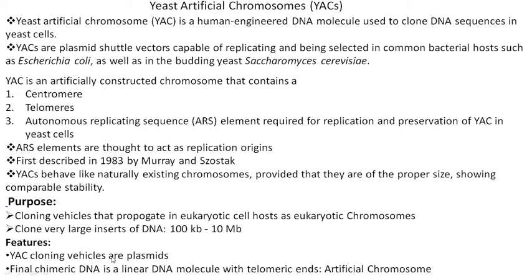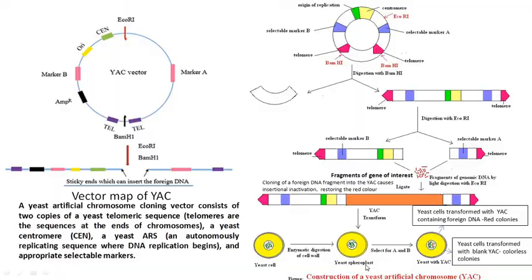YAC is a cloning vehicle; it can also act as a plasmid. The final chimera means you can make a huge fragment of DNA and clone it in the YAC. This chimera is actually a DNA molecule with telomeric ends, and that is why it is called an artificial chromosome. Here you can see the vector map of this artificial chromosome — this circular form replicates in the bacterial system. You can see the two telomeric regions, the PalmH1 site, and an ampicillin resistance site for the bacterial system.